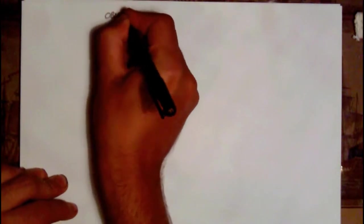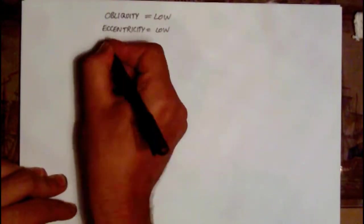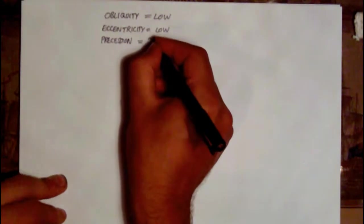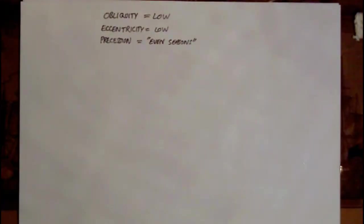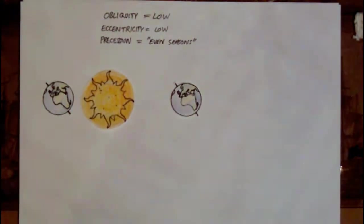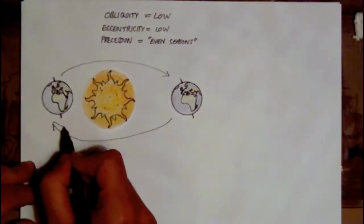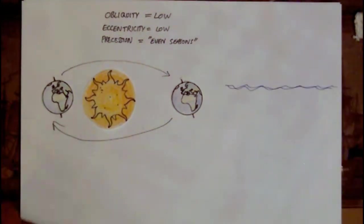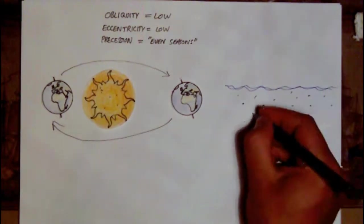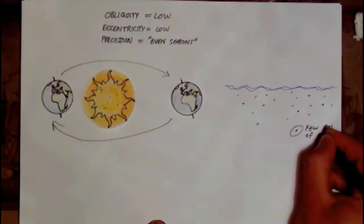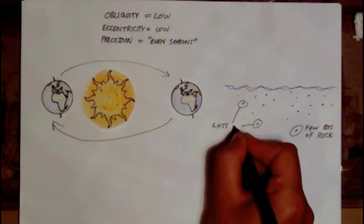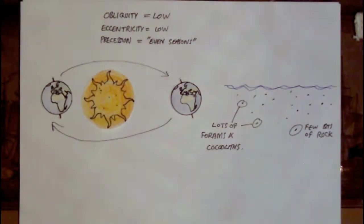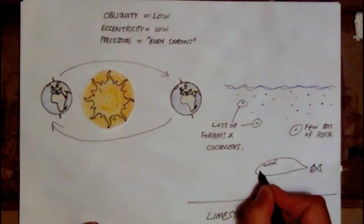When eccentricity and obliquity are low, and the North Pole points away from the Sun at perihelion, the seasons here at Lyme were less extreme. This provided the perfect environment, warm and tropical, for the production of the mineral calcium carbonate, either through chemical precipitation out of the water or through biological means, little creatures producing their tests, their shells, out of this mineral. While simultaneously reducing the effects of erosion on nearby land masses, resulting in less silt and mud being deposited in the ocean. This gives rise to the layers of limestone.